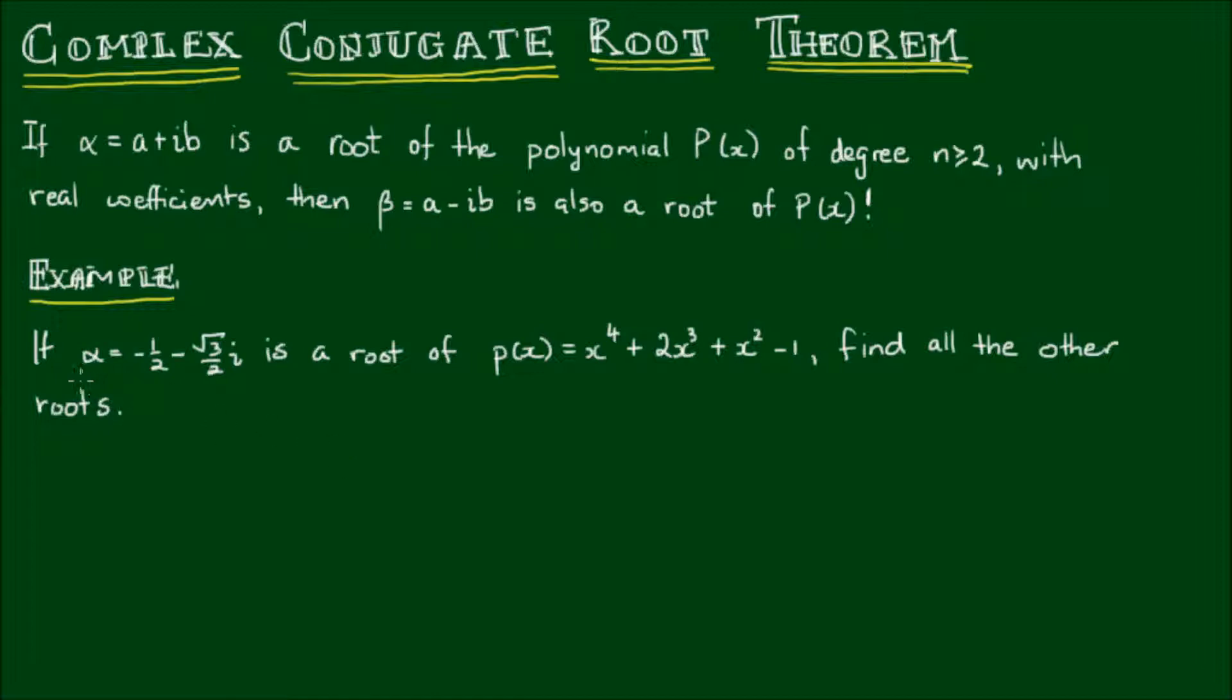Okay, the first thing we'll do is we'll test whether α is really a root of P(x). And to do that, I'll rearrange P(x) a little bit to make it easier to substitute α into. So I'm going to write P(x) as: I'll factor out x² from the first three terms. So x² outside of (x² + 2x + 1) - 1. Then this simplifies to x²(x + 1)² - 1.